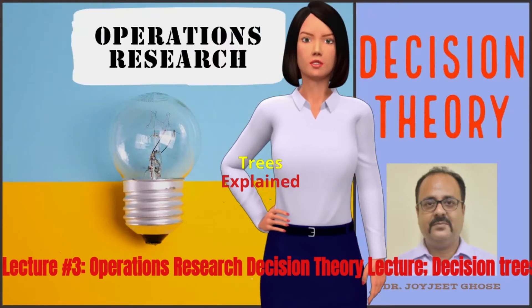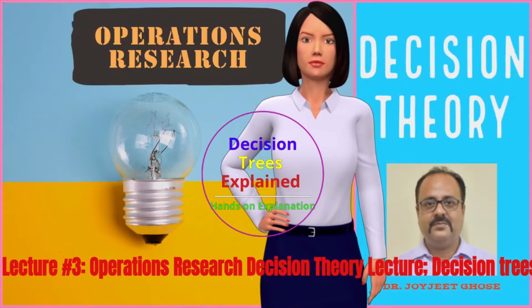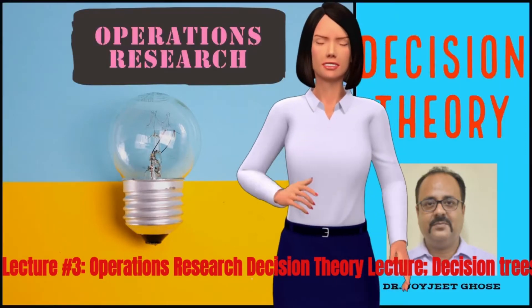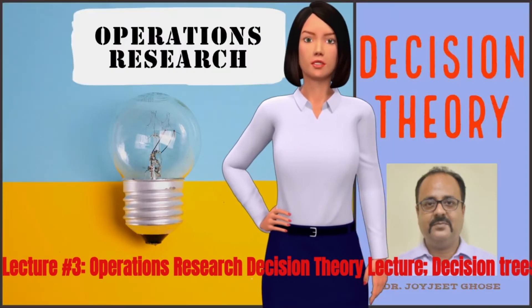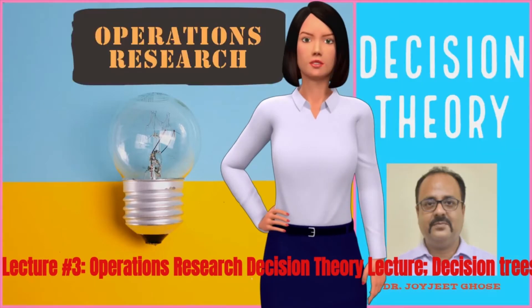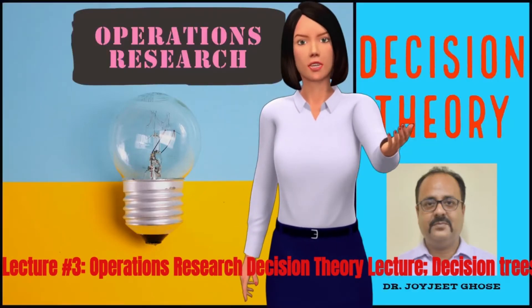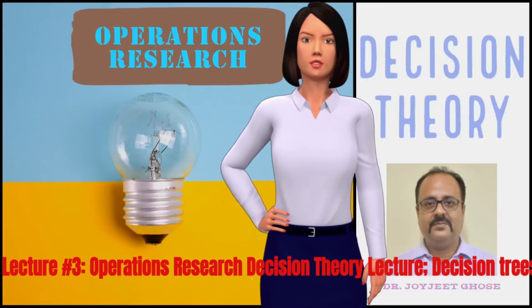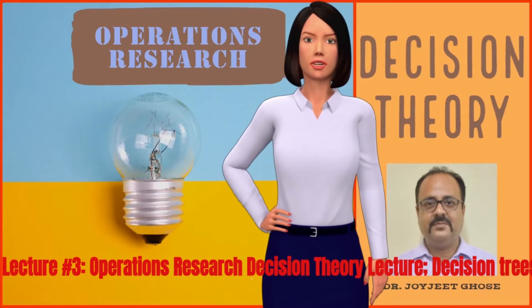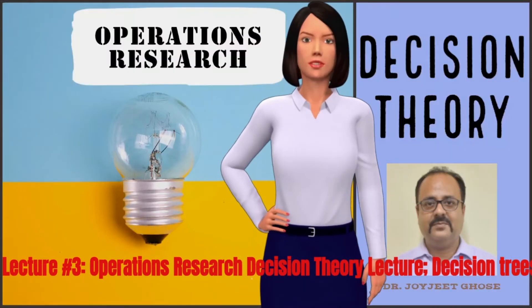Welcome to Operations Research Decision Theory Lectures Series by Professor Jojit Ghosh. This is the third lecture of a three-lecture series on decision trees, covering multi-stage decision-making problems. Decision node, chance node, terminal node, and branches are explained. How to construct a decision tree is explained clearly, including how to calculate the EVM at each chance and decision node, with several examples discussed.